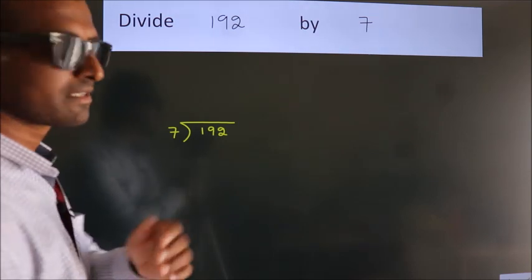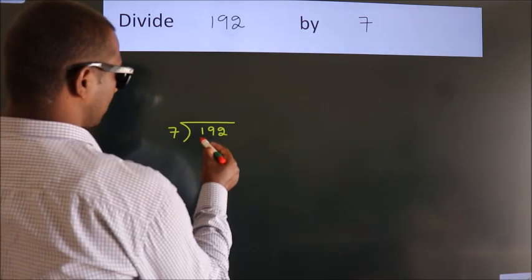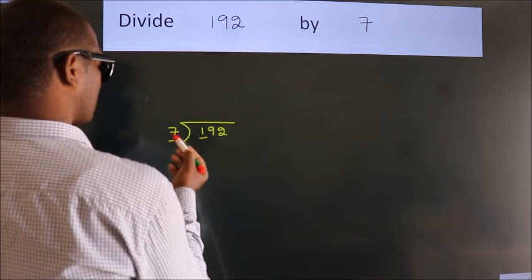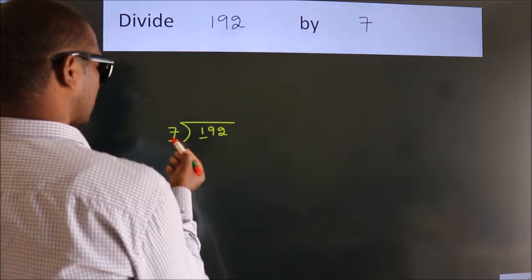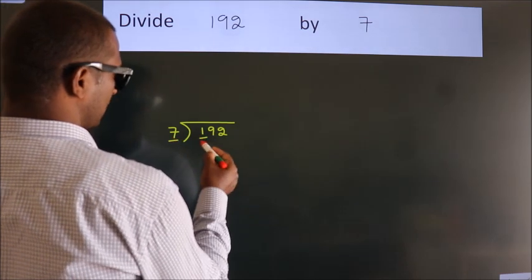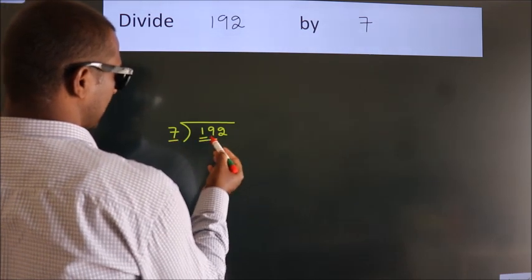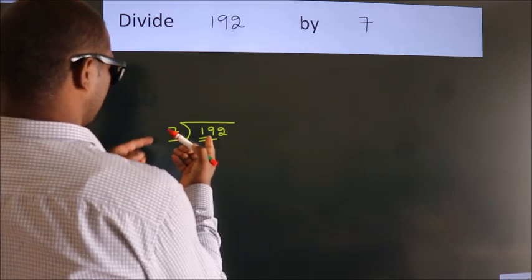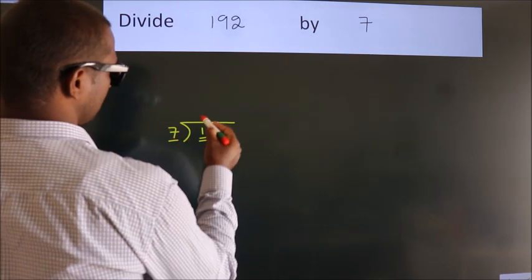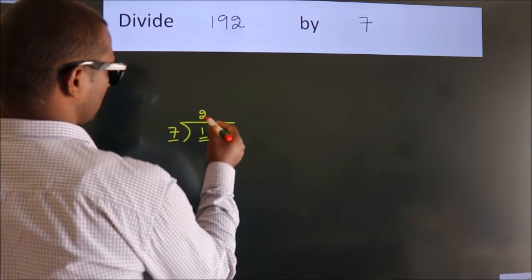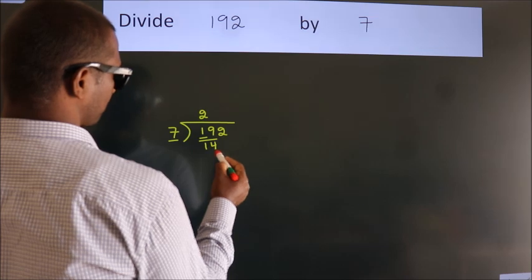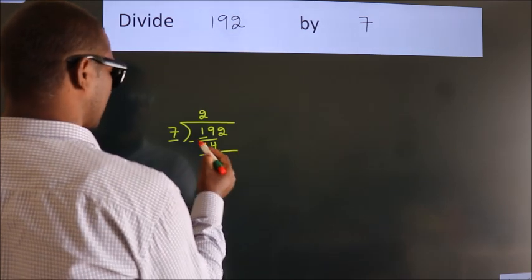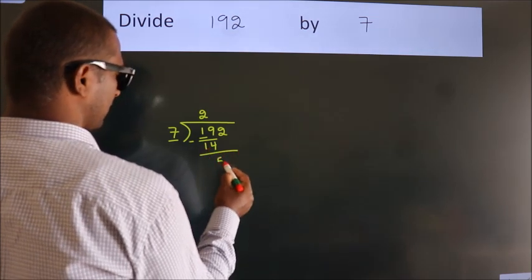Next. Here we have 1, here 7. 1 is smaller than 7, so we should take two numbers: 19. A number close to 19 in the 7 table is 7 twos 14. Now we should subtract. We get 5.